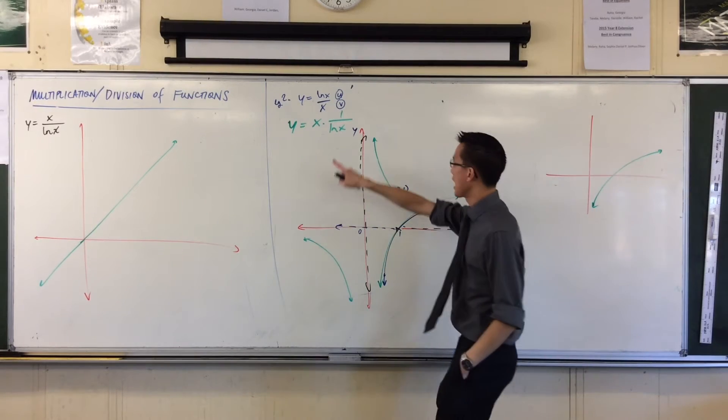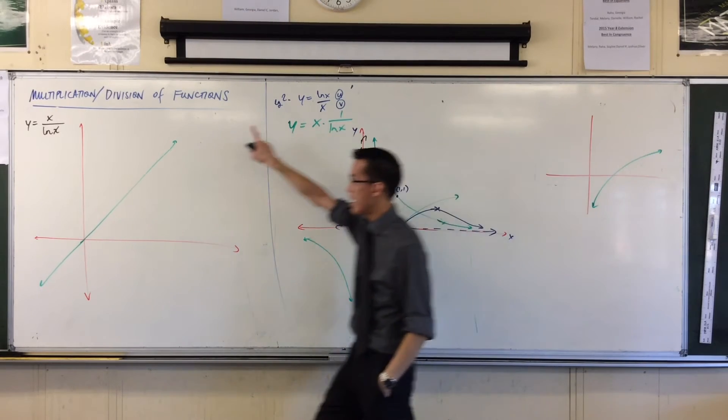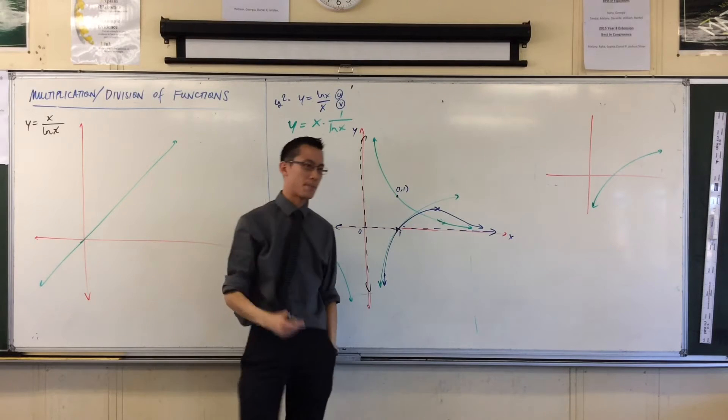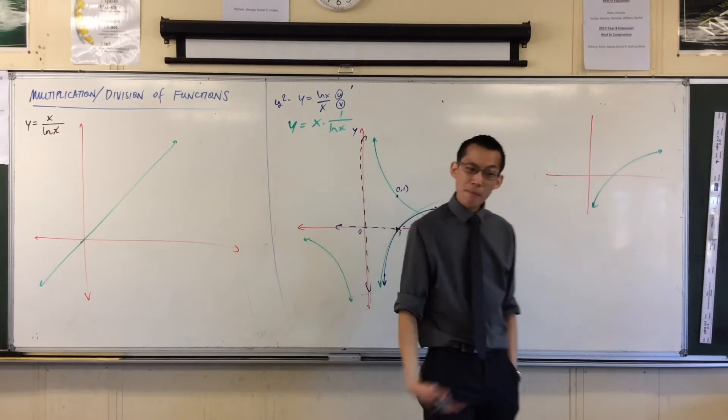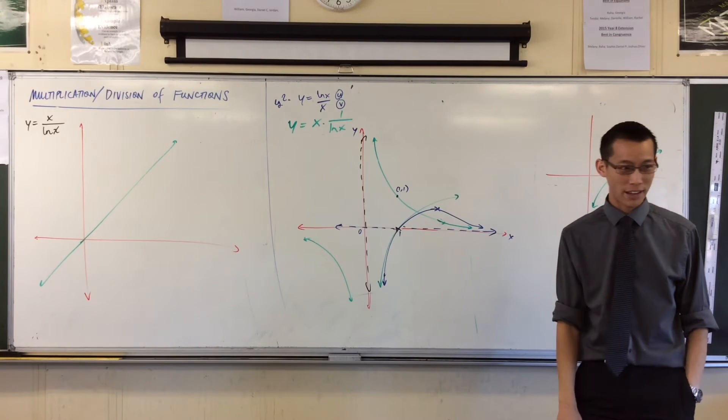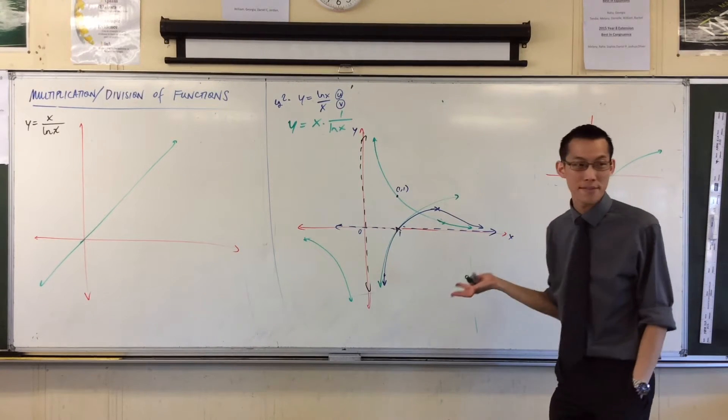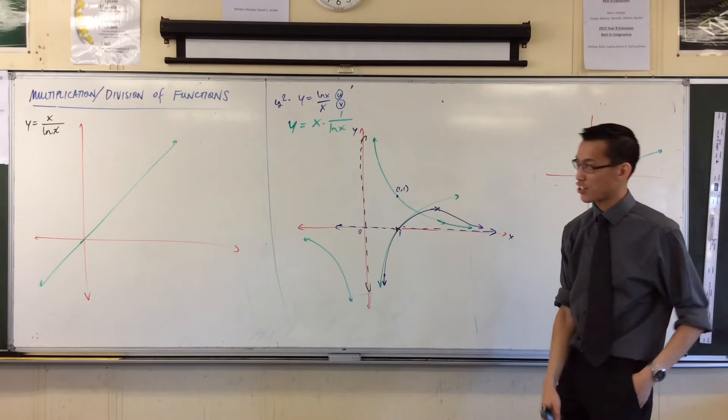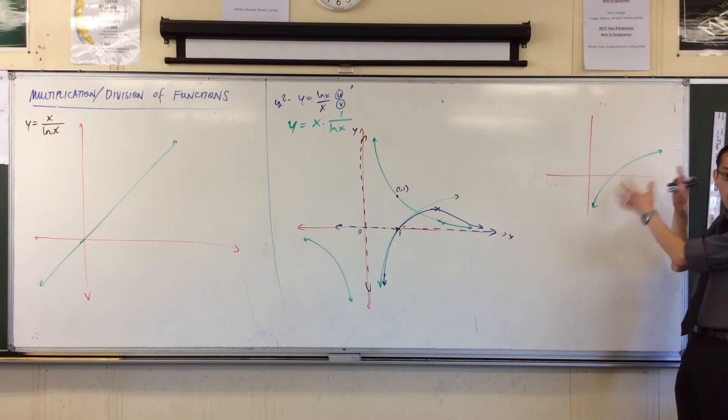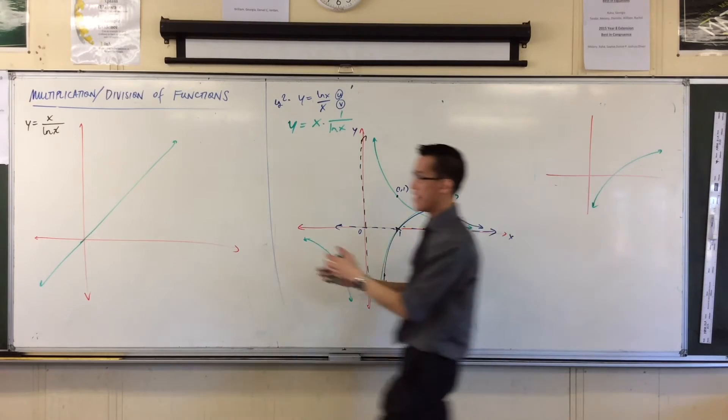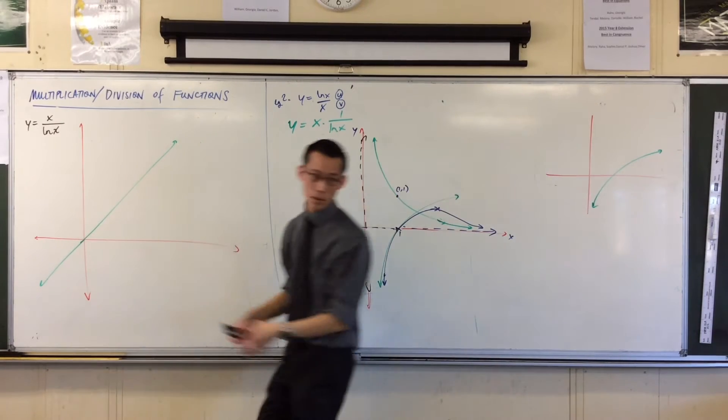So I'm doing x over log x, and you can see I've broken it apart into x and the reciprocal of log x. So there's x, there's the easy part. I'm not familiar with 1 over log x. So rather than put three computer graphs onto my Cartesian plane and get really confused, I'm going to do log x over here and then do its reciprocal. And then once I know what that reciprocal looks like, then I'll put it onto here and I will do the multiplication.